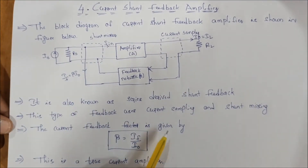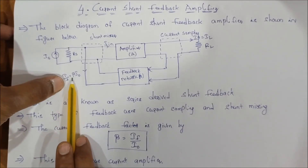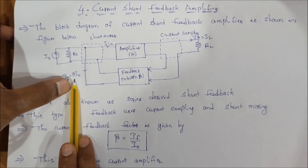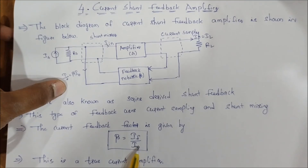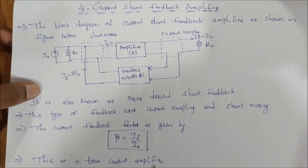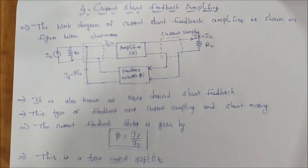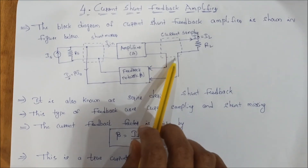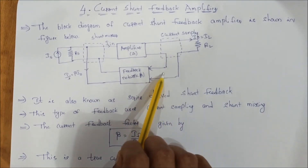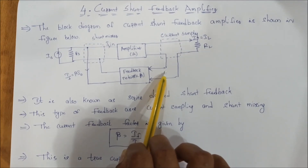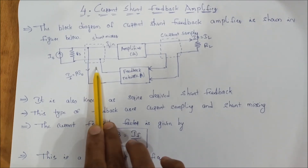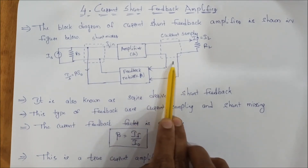The current feedback factor is given by: the feedback current is proportional to the output current. If equals beta into I0, so beta equals the feedback factor If divided by I0. This is a true current amplifier input. The feedback network output connects in series, so output resistance increases. The feedback network output connects to the amplifier input via shunt, so input resistance decreases. Output resistance increases and input resistance decreases.